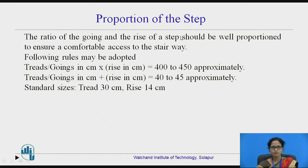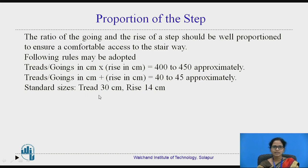The proportion of the step: there are some ratios regarding the riser and the tread. The product of the tread and the riser should be around 400 to 450 approximately. The sum of the tread and the riser should be 40 to 45 approximately. The standard size of the tread is 30 cm, whereas for the riser it is 14 cm in case of residential buildings.